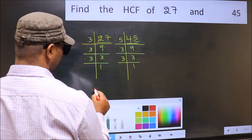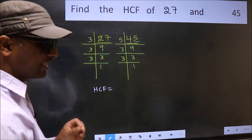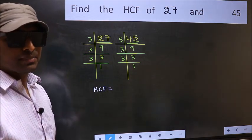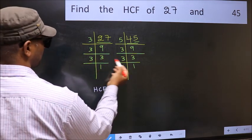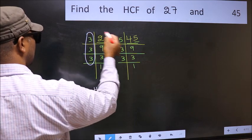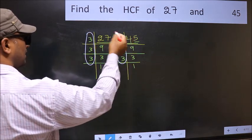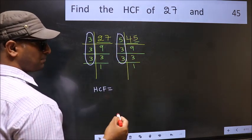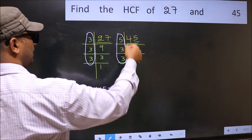Therefore, our HCF is the product of the numbers which should be present in both factorizations — that is, here and also here. Here and here. So now let us find the numbers which should be present here and here.